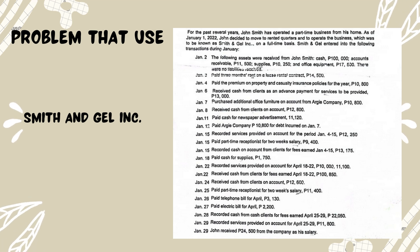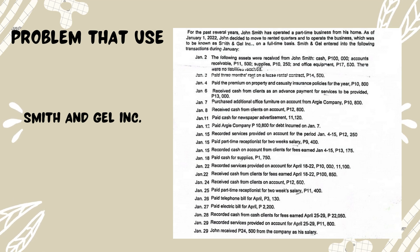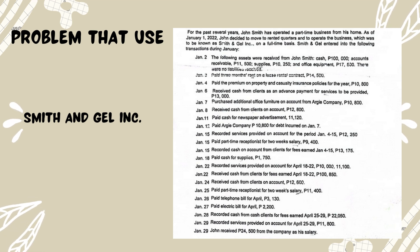Transaction dated January 3: paid 3 months rent on a lease rental contract for $14,500. Transaction dated January 4: paid the premium on property and casualty insurance policies for the year, $10,800. Transaction dated January 6: received cash from clients as an advance payment for services to be provided, $13,000. Transaction dated January 7: purchased additional office furniture on account from RG Company, $10,800.